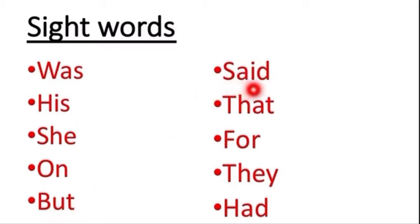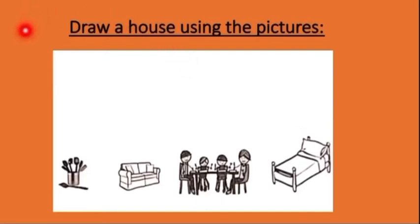Said, S-A-I-D. That, T-H-A-T. For, F-O-R. They, T-H-E-Y. Had, H-A-D. So, these are sight words. In page number 13, 14 and 15 children, we have dictation words which I will give you in the class. And also we have writing practice of the words which you have to complete.